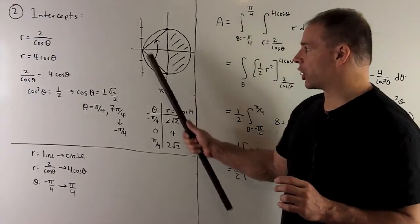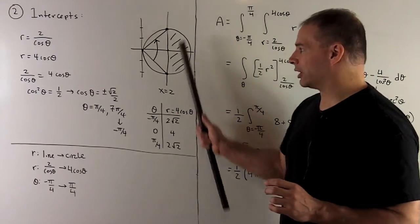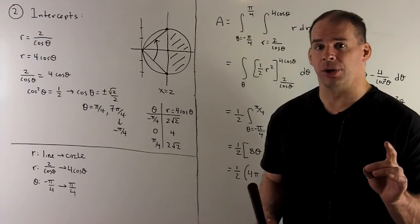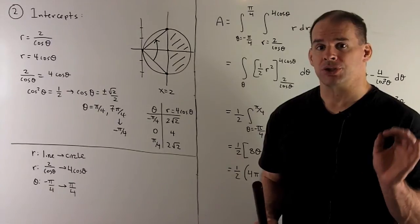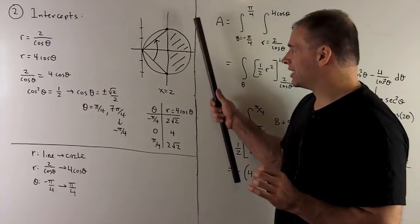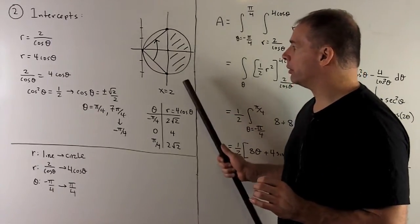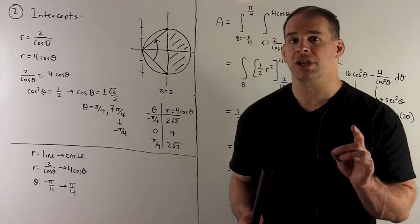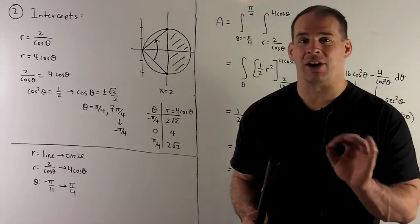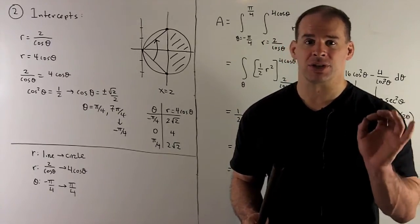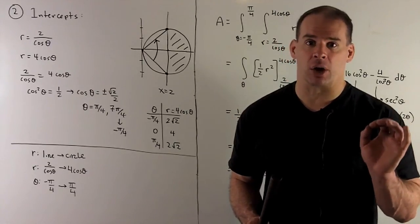Now we have our circle and our line with x greater than 2, so we're trying to find the area of this semicircle. We know how to get the area of that without calculus, so this will serve as a check on our work.